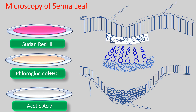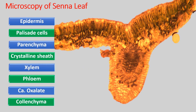Phloem is non-lignified but picks up a slight yellow color. If you add acetic acid to the sections, acetic acid dissolves all the cellular debris and makes the calcium oxalate crystals clearly visible. One should add acetic acid only to observe calcium oxalate crystals under 40x or sometimes 10x magnification. The actual image of the Senna sections shows epidermis in golden yellow color, palisade cells, crystal sheath, xylem, phloem, calcium oxalate, and collenchyma.